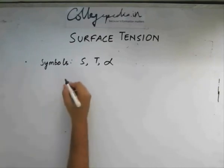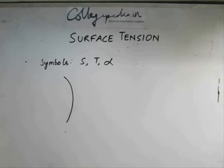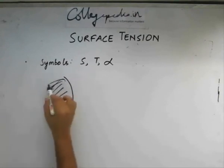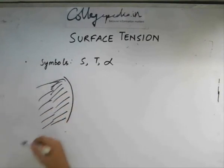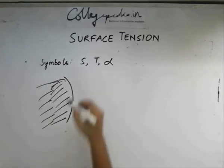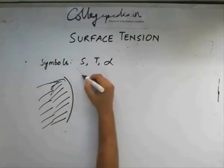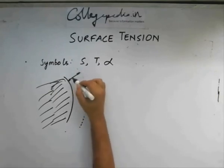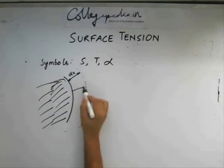Let me consider an arc of a circle. This arc is basically a part of the surface of a liquid, let's say. Considering another arc here, which is at a radius distance of dx from the inside arc.